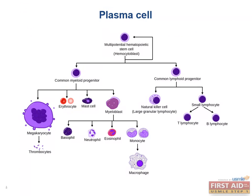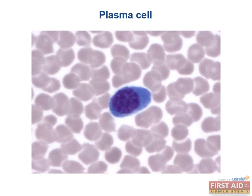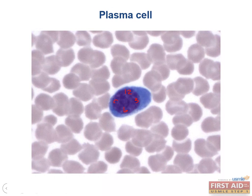Plasma cells are descendants of activated B cells and basically function as antibody factories. They have an off-center nucleus, which is often described as a fried egg appearance. Other features of plasma cells include chromatin in a clock face distribution — heterochromatin that is condensed and placed at the outer edge of the nucleus.